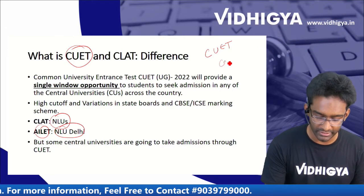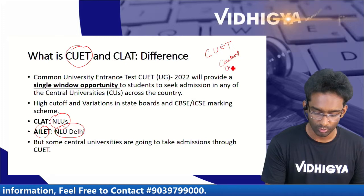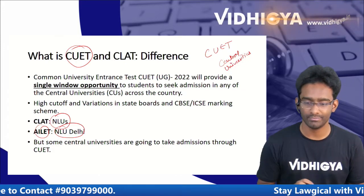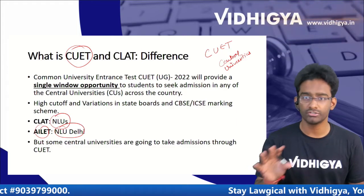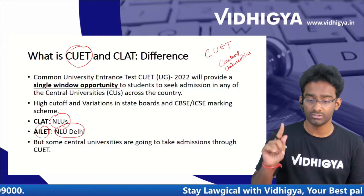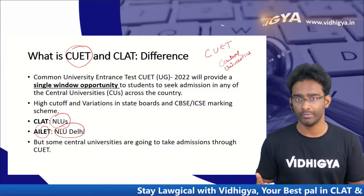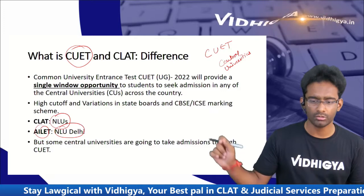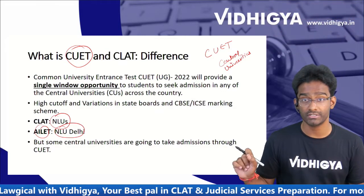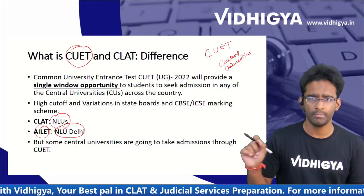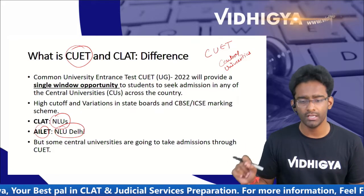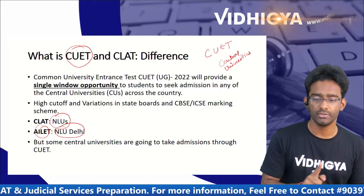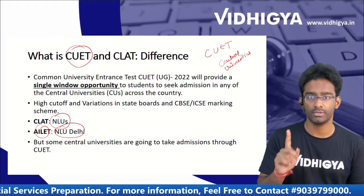If you need admission to central universities, then you have to give the CUET exam. The difference between CLAT and CUET is that CUET covers central university courses like B.Com, BA, BBA, BSc, and also includes the 5-year BLLB integrated course at central universities.